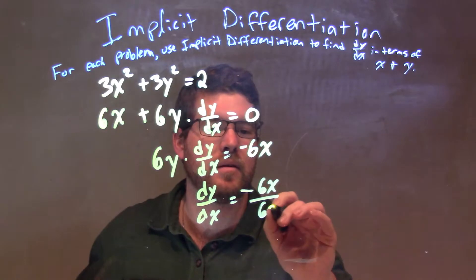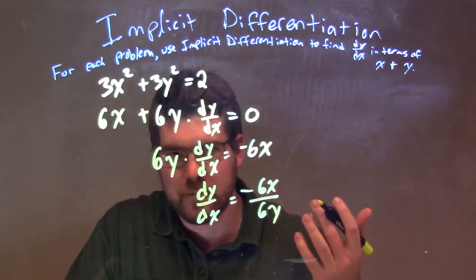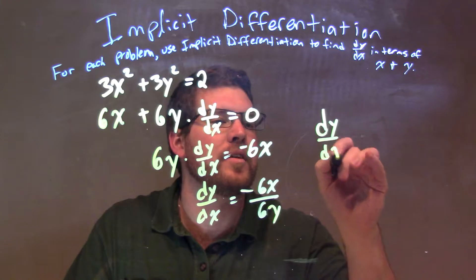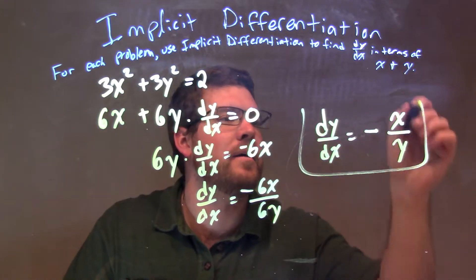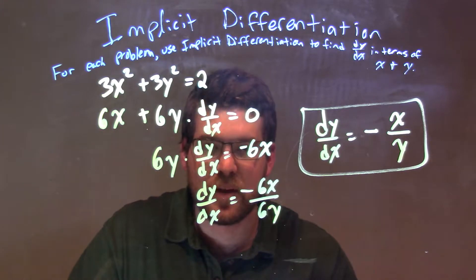Okay? Now the 6s basically cancel out. So we have dy/dx is equal to negative x over y. And that is my final answer.